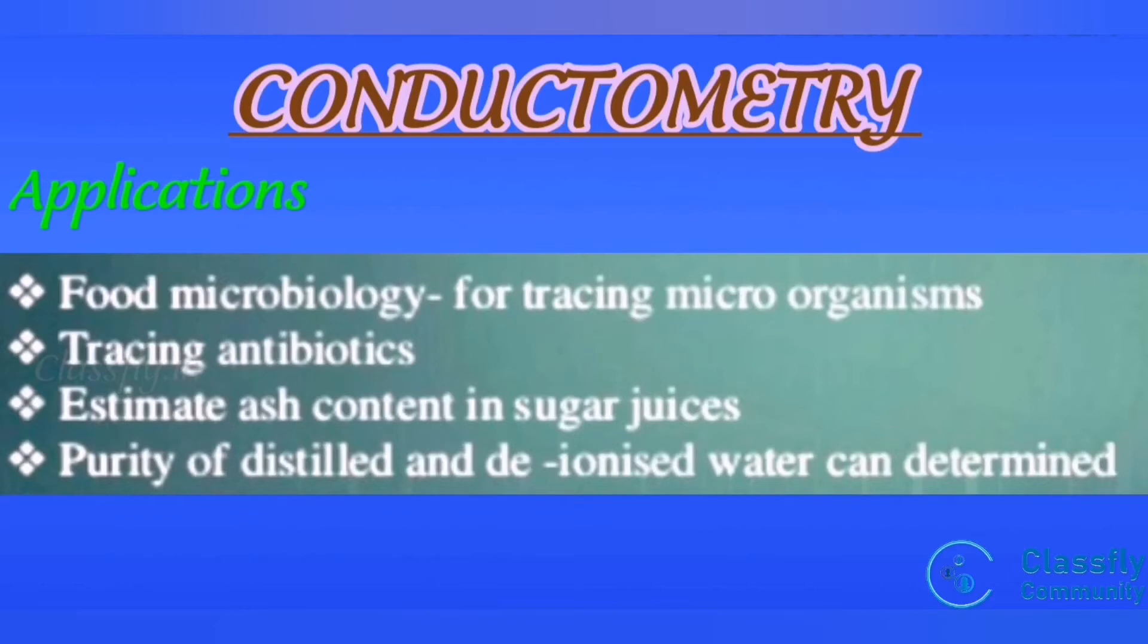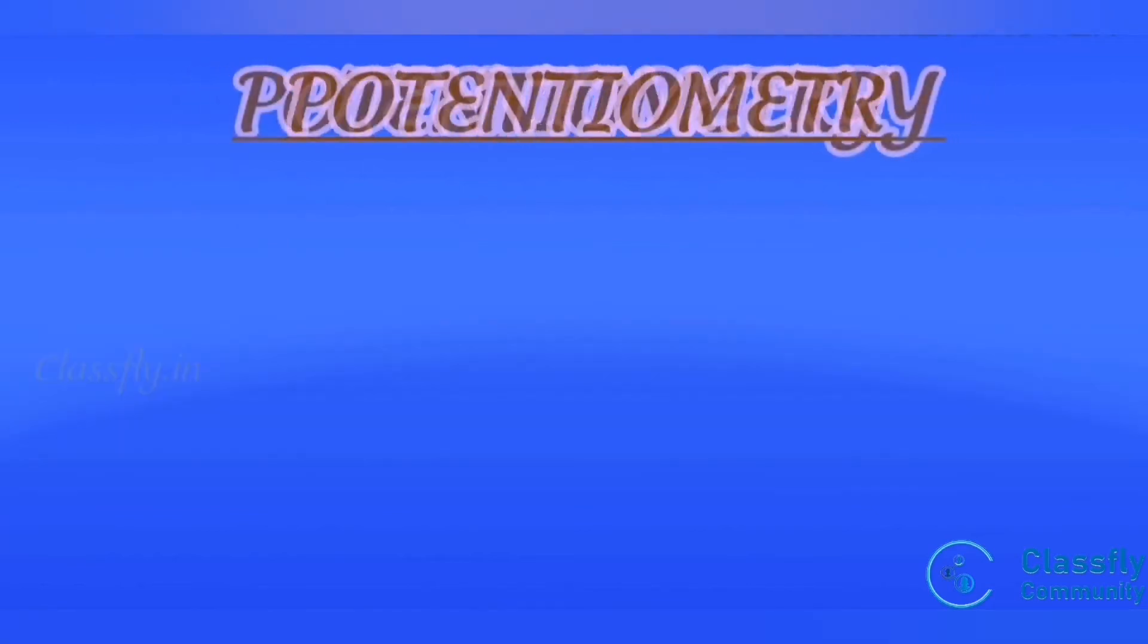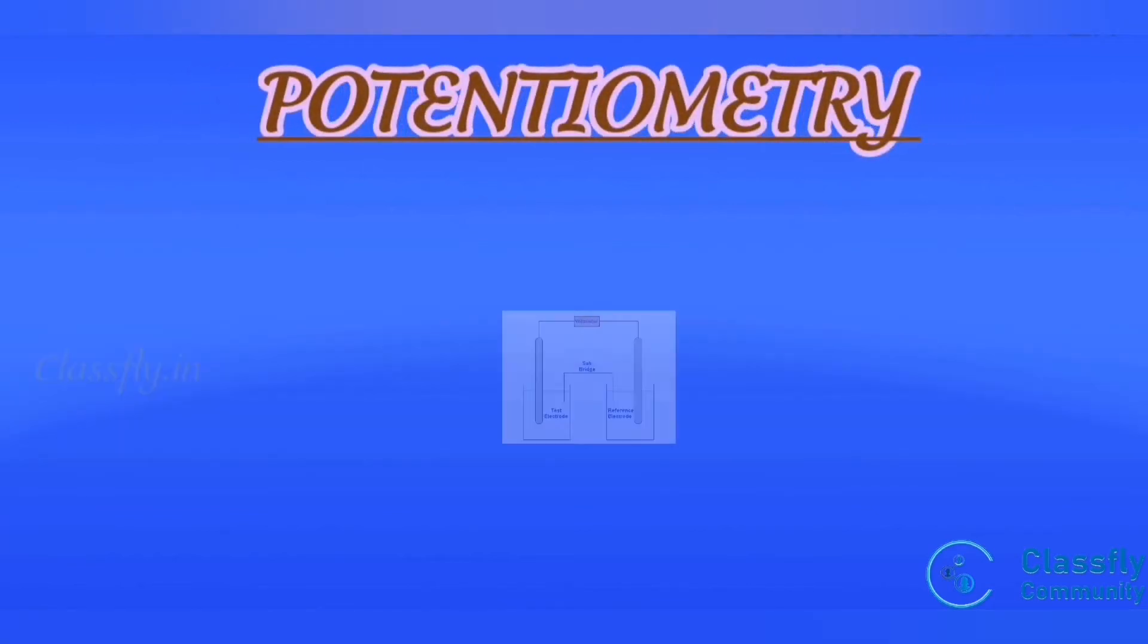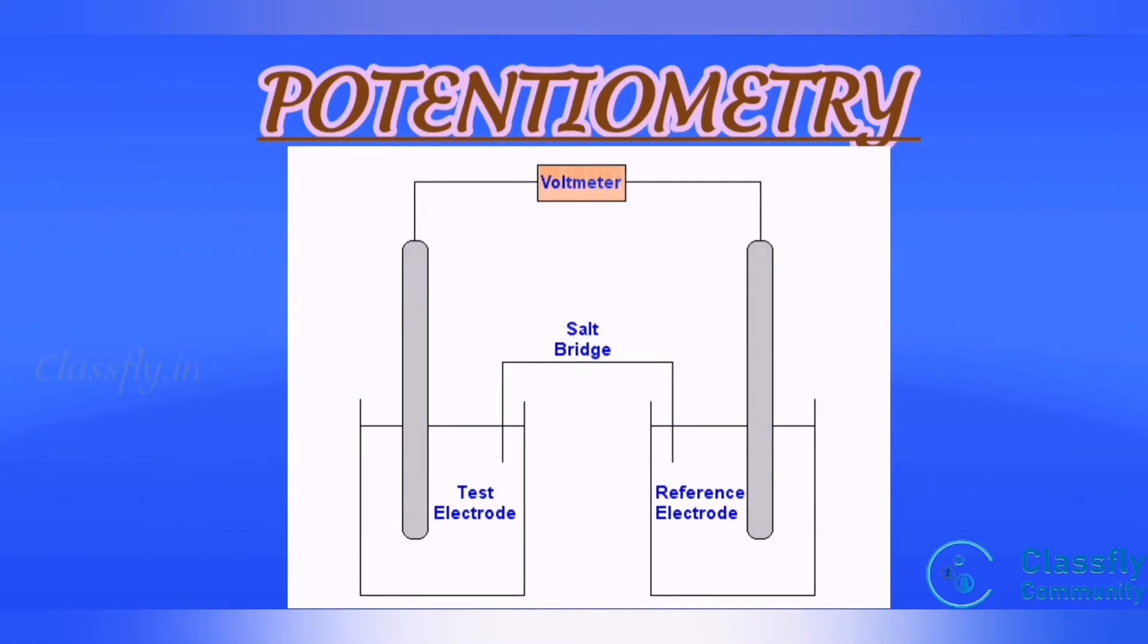Next, move on to potentiometry. Potentiometry is a procedure through which the quantity of the given test substance is determined by measured addition of a titrant until the entire test substance undergoes reaction. After the titration process, the potential difference between the two electrodes, that is reference electrode and indicator electrode, is measured.